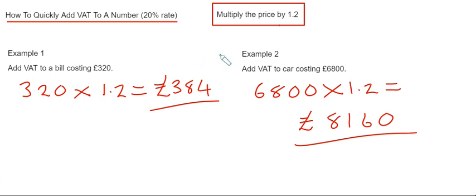So that's what you have to do — just multiply the number by 1.2. But only do this if the VAT is at a 20% rate. I hope you liked the video, guys. Thanks for watching, see you next time.